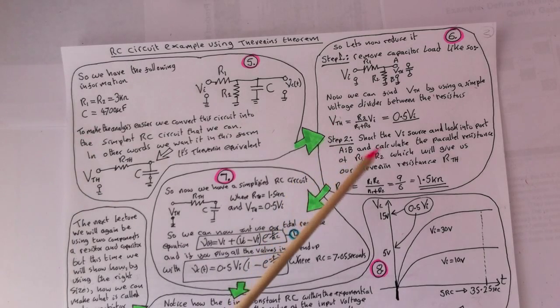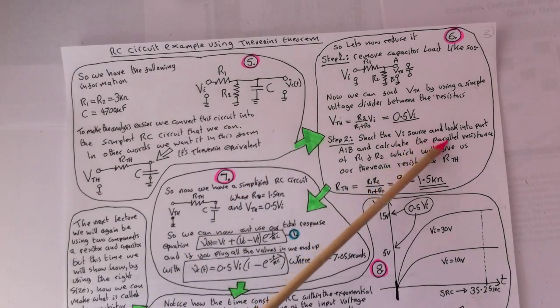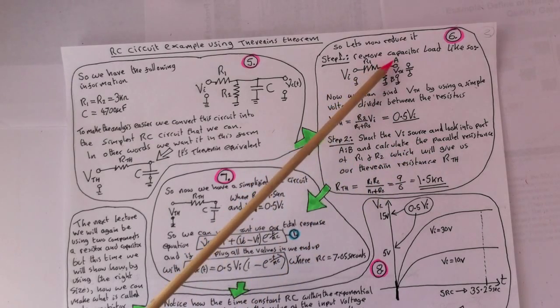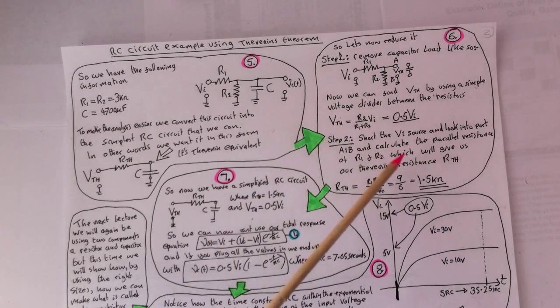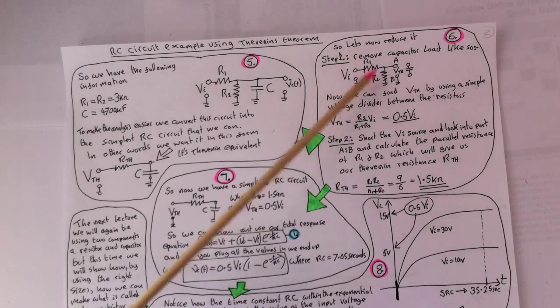Step two, short the source supply, the VI. We're going to short that supply voltage and look into the port AB. So we're going to look into where I've labeled it AB here. And then we'll calculate the parallel resistance that we see.